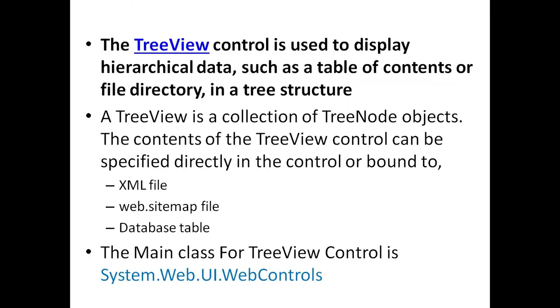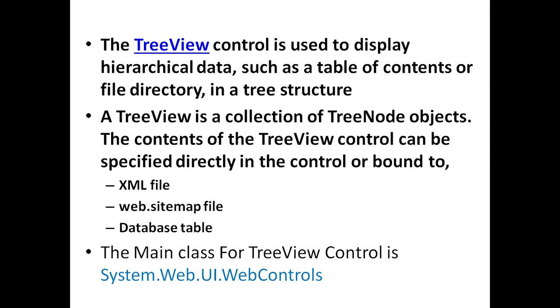Here we will see the TreeView control in ASP.NET. The TreeView control is used to display hierarchical data, such as a table of contents or file directory, in a tree structure. A TreeView is a collection of tree node objects. The content of the TreeView control can be specified directly in the control, or it can be bound to an XML file, a web.sitemap file, or a database table.